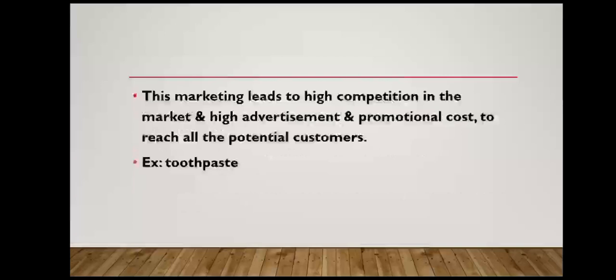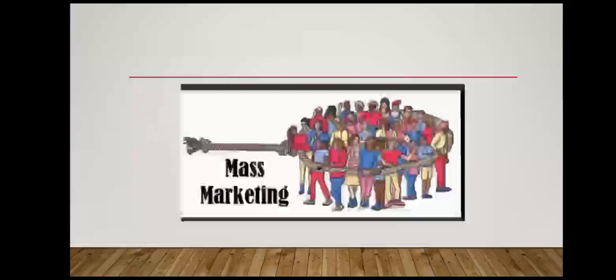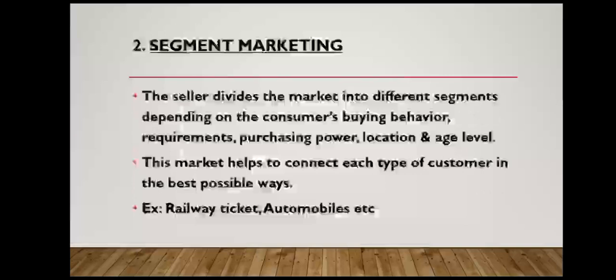Take the example of salt and sugar — they are manufactured in bulk. There is no bifurcation that this is for high class or low class people; it is common for all and cheaper. Salt can be purchased for around 10 to 35 rupees per kg, affordable because of mass production. In the image, mass marketing means everybody is included — there is no bifurcation.